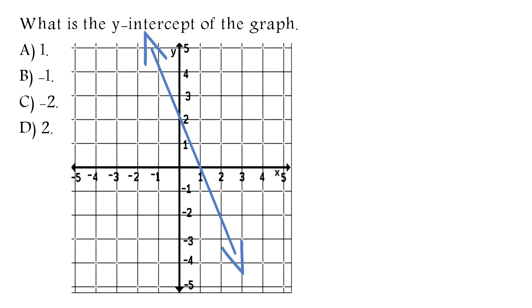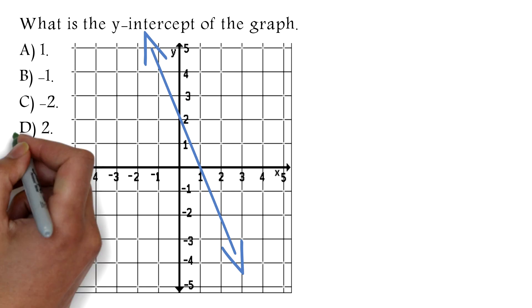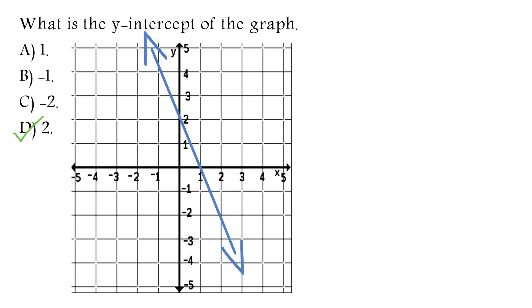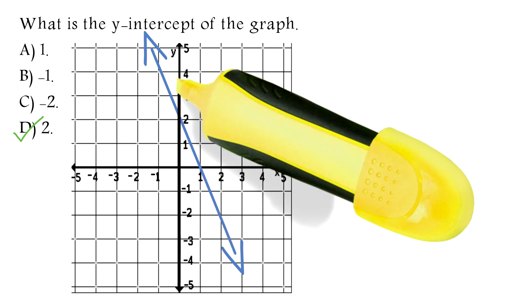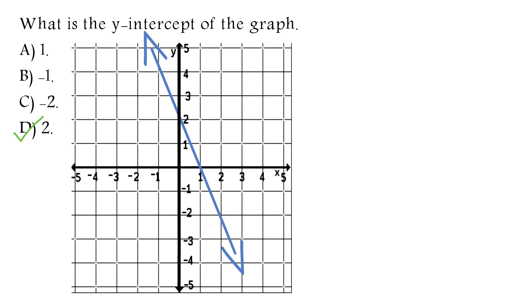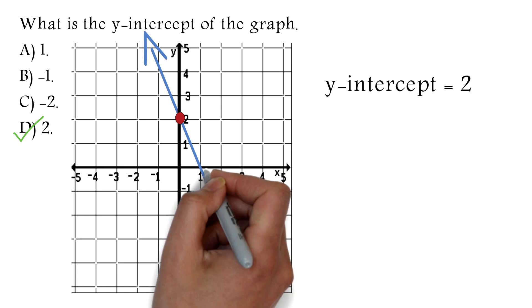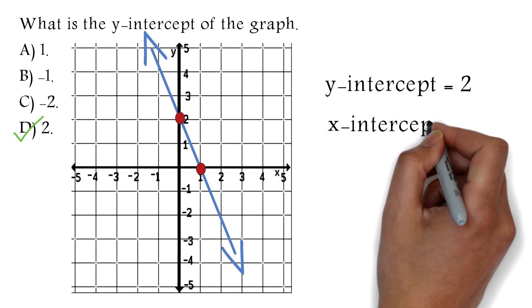What is the y-intercept of the graph? A. 1. B. Negative 1. C. Negative 2. D. 2. The correct answer is D, 2. The y-intercept is the point where the line meets the y-axis. The line meets the y-axis at this point, and the value there is 2. Therefore, the y-intercept is 2. You could also be asked to find the x-intercept — that is simply the point where the line meets the x-axis, which would be 1.